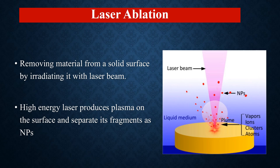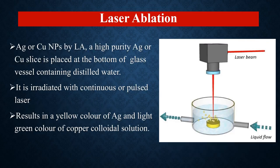Here is laser ablation: removing material from a solid surface by irradiating it with a laser beam. The laser beam imparts energy to the material and converts it into nanomaterial. High energy at the start produces plasma on the surface which separates its fragments as nanoparticles. When nanoparticles are formed they are highly reactive — their surface energies are high, so they coagulate. Therefore, a liquid flow is necessary so that the materials are formed and flow in a liquid to prevent coagulation.